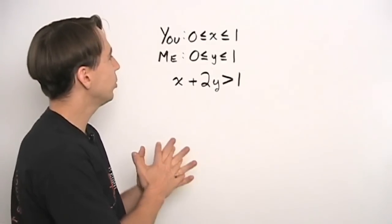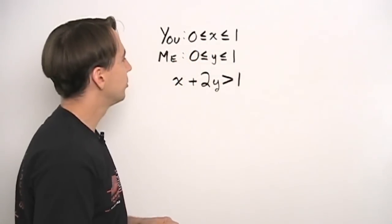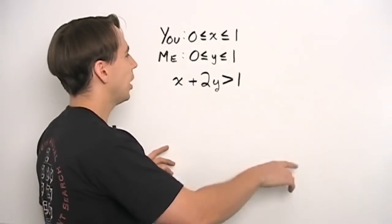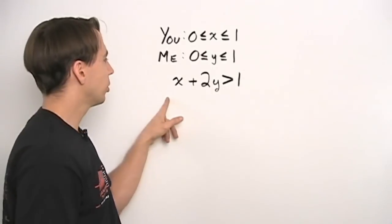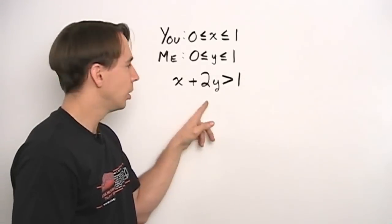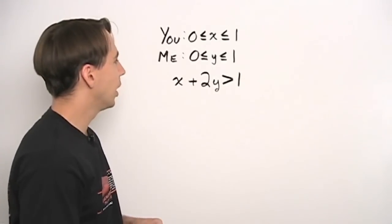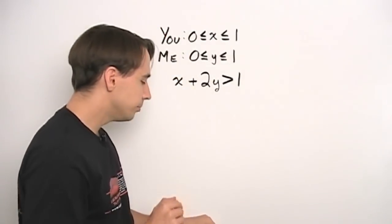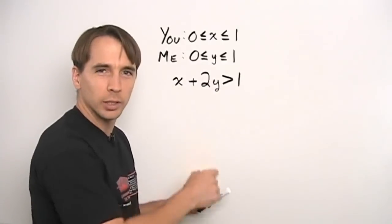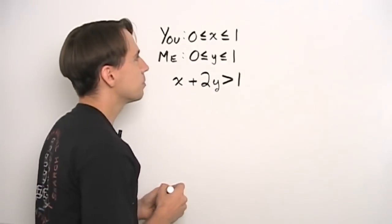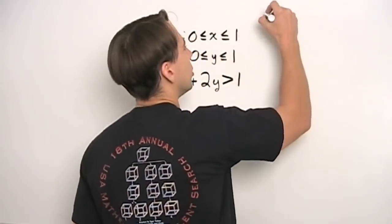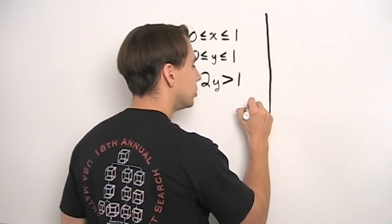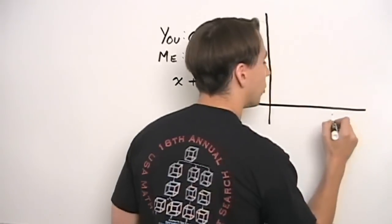So how are we going to measure this? The number of ways you can pick a number from 0 to 1, the number of ways I can pick from 0 to 1 — we could try plotting them on a number line, but it's not clear what we'd do about the condition x plus 2y greater than one on the number line. However, x and y do suggest another way we can look at this problem. Sometimes pictures are very revealing, so let's draw a picture. The x and y suggest — let's try graphing.